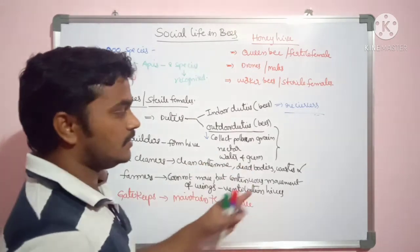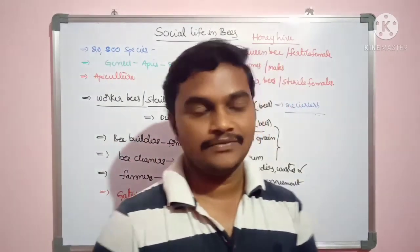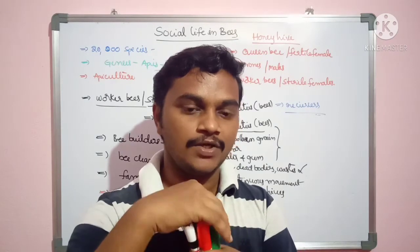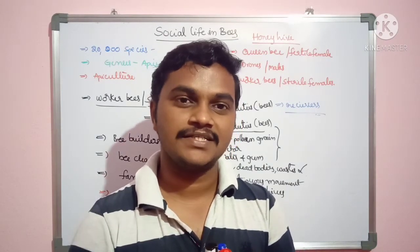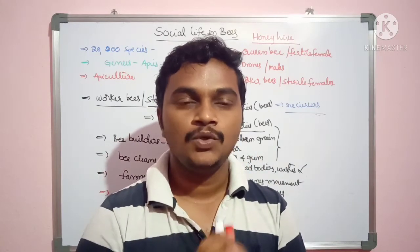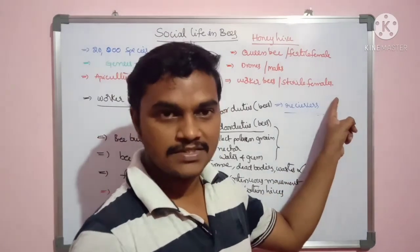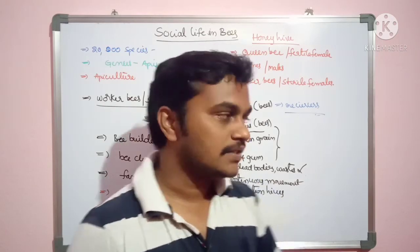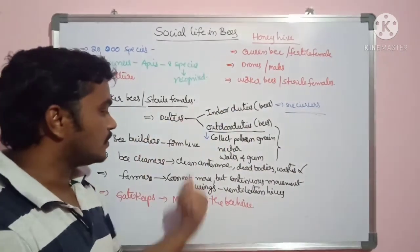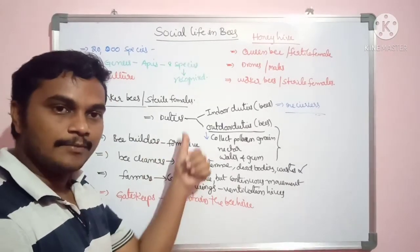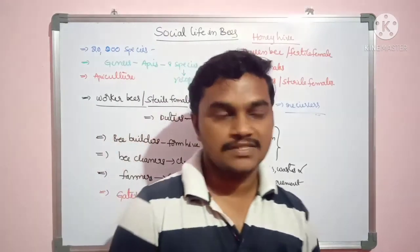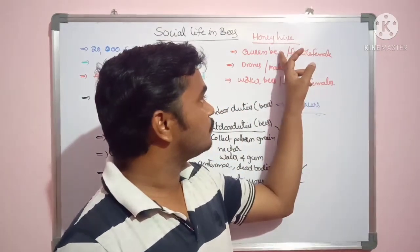There is a clear division of labor among worker bees. Gate keepers are also present — they maintain the beehive entrance. So structurally worker bees are different, and their duties include various roles. There is a labor division — indoor bees and outdoor bees, and different types such as builders, cleaners, fanners, and gate keepers. Next we will be discussing drones.